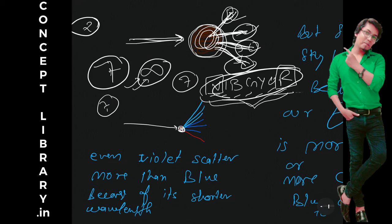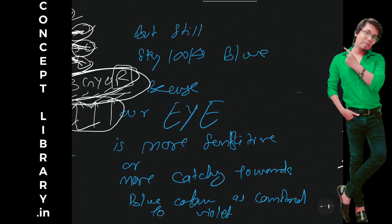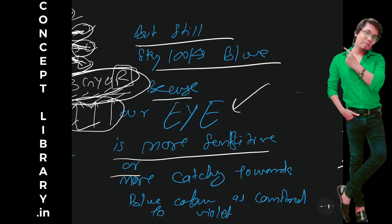Fine, come to the point. So even violet scatters more than blue because of its shorter wavelength, right, so definitely as per technicality it has to scatter more than the blue. But still sky looks blue, it does not look violet. It is actually because of our eye - our eye is more sensitive or you can say more catchy towards blue color as compared to violet color.